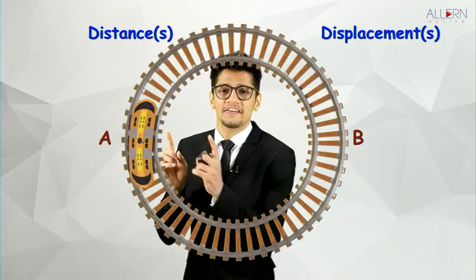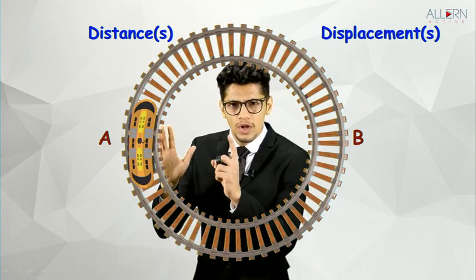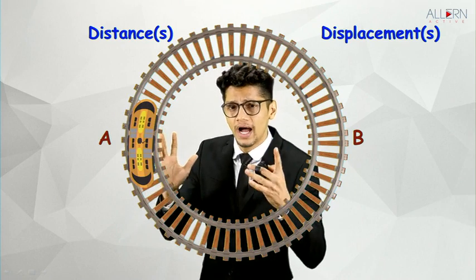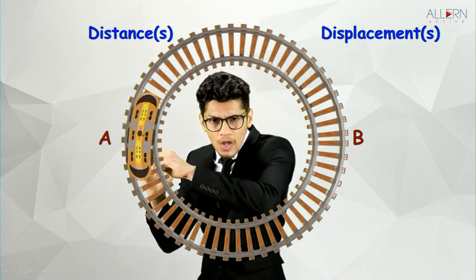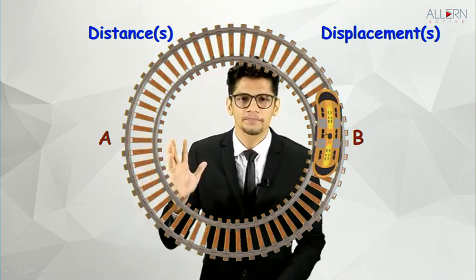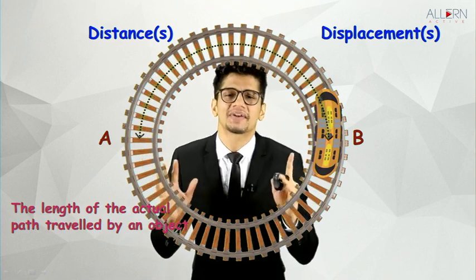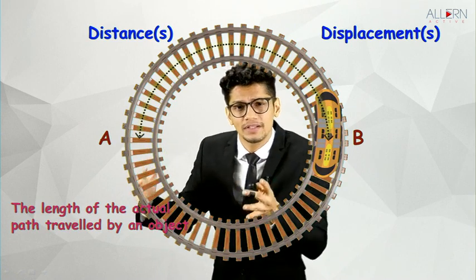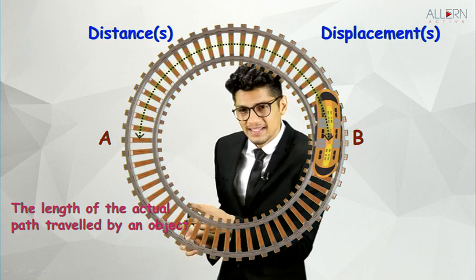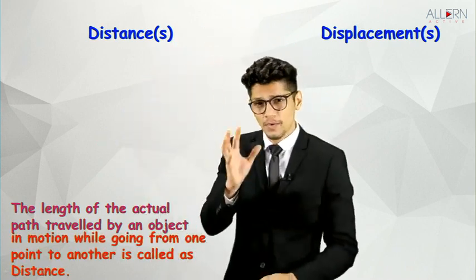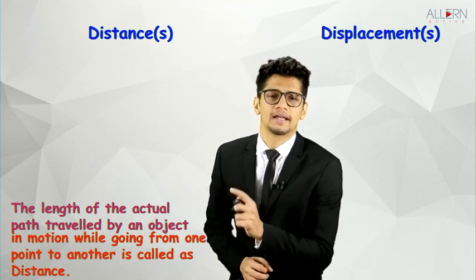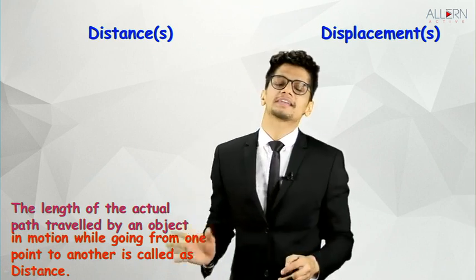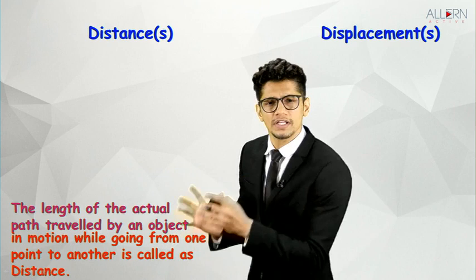We have a train right now at point A, and this train wants to move from point A to point B. The train will actually move along the curved path of the track — this is the actual path traveled by the object. This actual path is called distance. The definition: the length of the actual path traveled by an object in motion while going from one point to another is called distance.